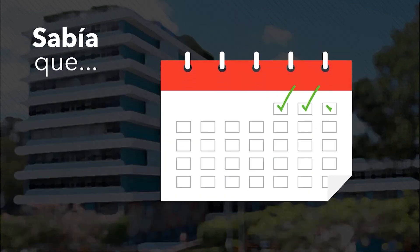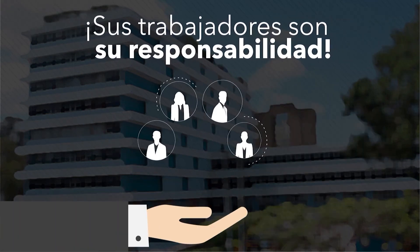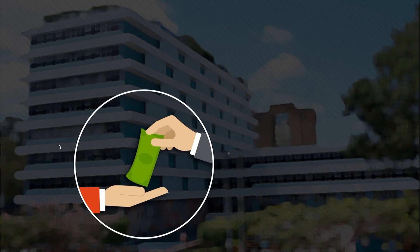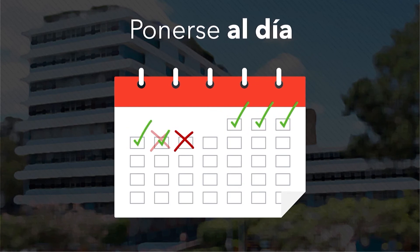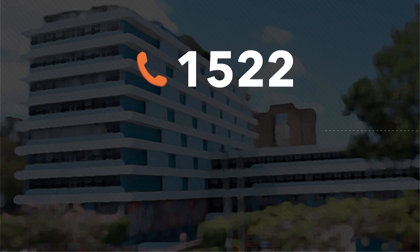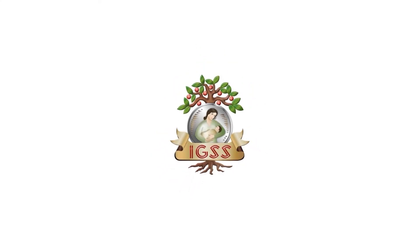Estimado Patrono, ¿sabía que al estar al día en el pago de las cuotas laborales y patronales al IGSS le garantiza a sus trabajadores los servicios de salud y de prestaciones en dinero? Sus trabajadores son su responsabilidad. Si usted se retrasa en sus pagos, tendrá recargos por mora y el Instituto tiene la facultad de empezar un proceso de cobro administrativo y judicial. Si desea ponerse al día, le ofrecemos varios mecanismos como el reconocimiento de deuda, con el cual obtiene hasta un plazo de 60 meses. Para más información, puede llamar al 1522 o agréguenos al WhatsApp al 4602-9259. Instituto Guatemalteco de Seguridad Social, IGSS.